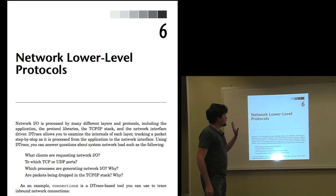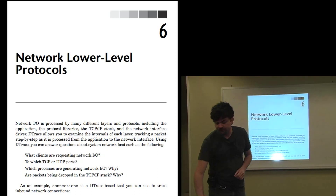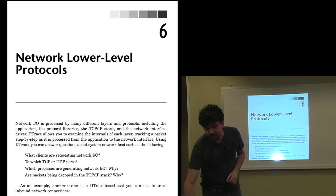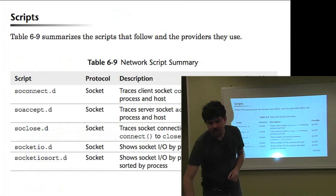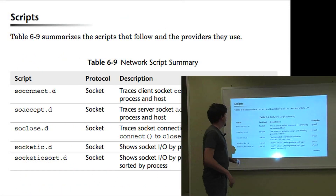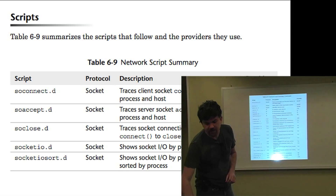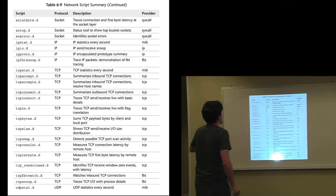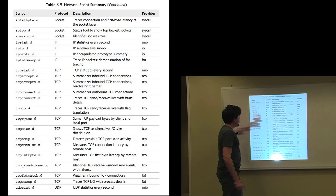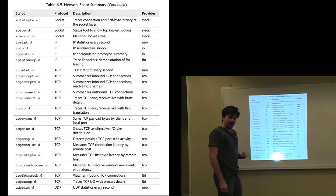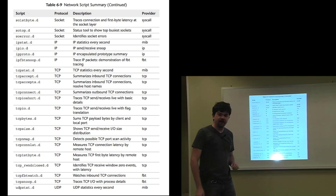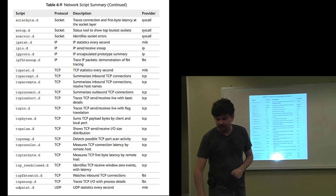Specifically, Chapter 6 was our network lower-level protocols, and some of the scripts inside there covered, apart from socket tracing via the syscall provider, all of these scripts: IP scripts using the IP provider, TCP scripts using the TCP provider, and UDP scripts.